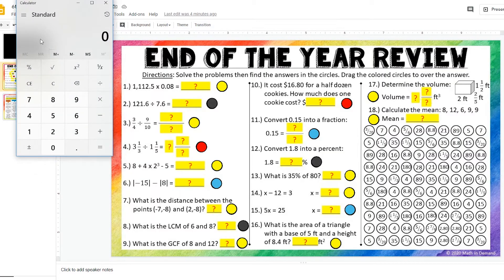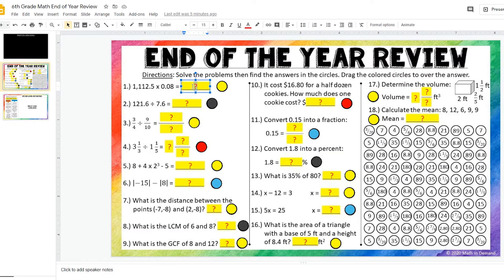So I am going to use a calculator, but again, you are going to need to solve your problems on a piece of paper. And I am going to put 1,112.5 times 0.08 equals 89. So what I am going to do is where I see the red question mark, I am going to type 89.